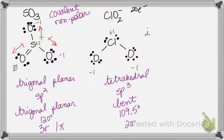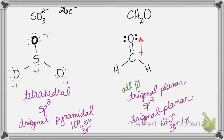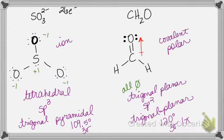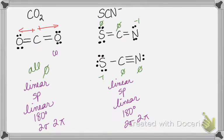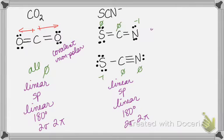ClO₂⁻ is an ion. If it weren't an ion, because it's bent it would have been polar, but since it's an ion we don't label that. Sulfite is an ion. CH₂O is covalent and polar — it's not symmetrical, it only has one bond dipole. Carbon dioxide is covalent and nonpolar — the two dipole arrows point straight out in opposite directions in a 180-degree linear molecule, so they completely cancel each other out. Thiocyanate is an ion.